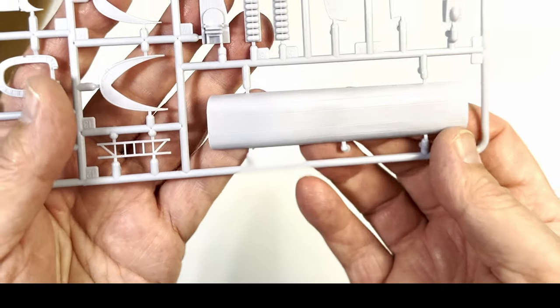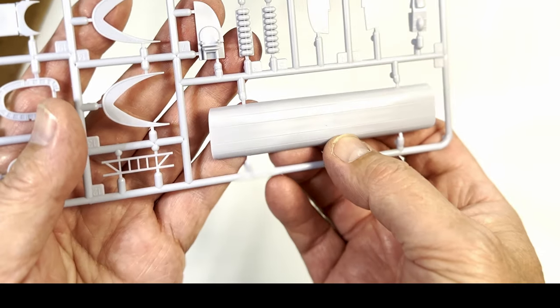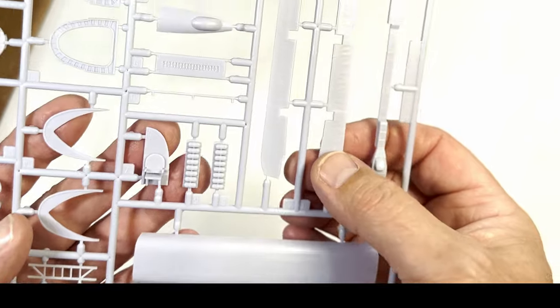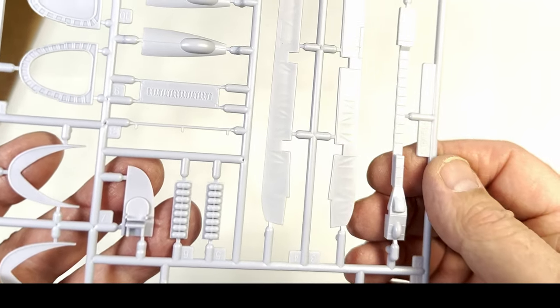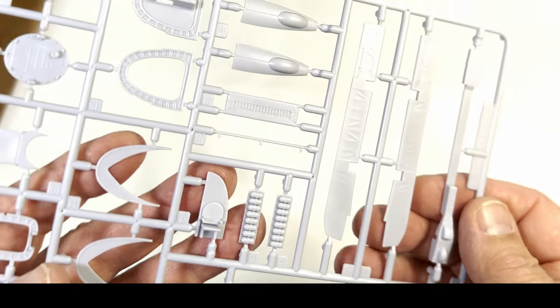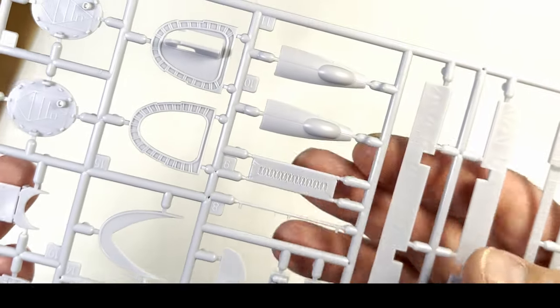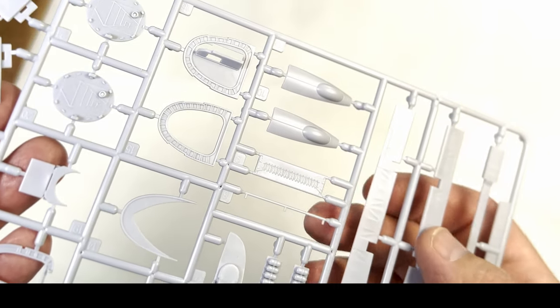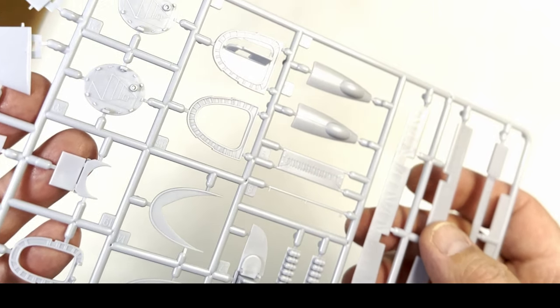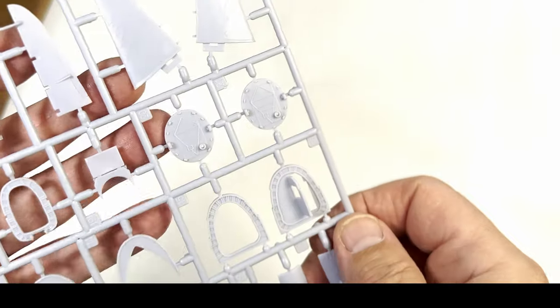This sprue contains the closed bomb bay doors, open bomb bay doors, the internal walkways, the stretcher, air tanks, some seats and some of the structures for passing through the fuselage, some parts for the engine as well like the firewalls.